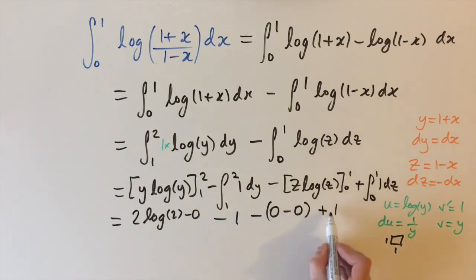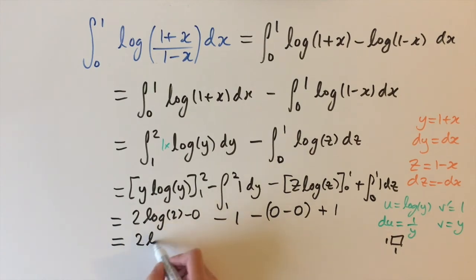And then we can just simplify the minus 1 and the plus 1 is going to cancel. This is 0 so it doesn't matter. And we have 2 log 2. So 2 log 2 is our answer.